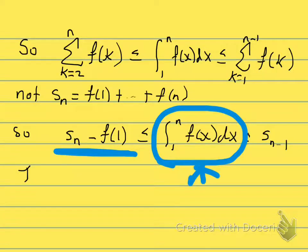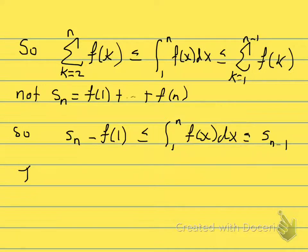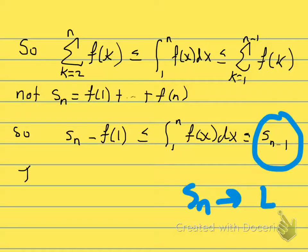Now, if the sum converges, if the sum converges, that means that sₙ is going to go to some fixed number L, so if sₙ is going to L, then certainly sₙ₋₁ is going to go to L also, which shows that this is going to be less than or equal to L also, and that shows that the summation converging implies that the integral converges.